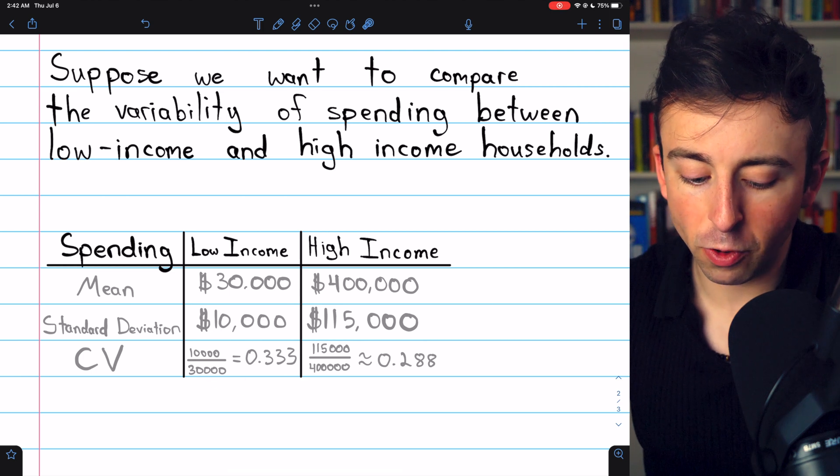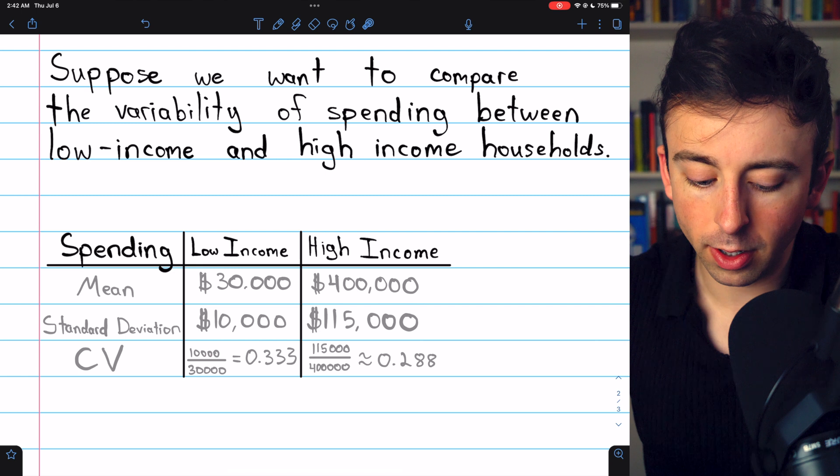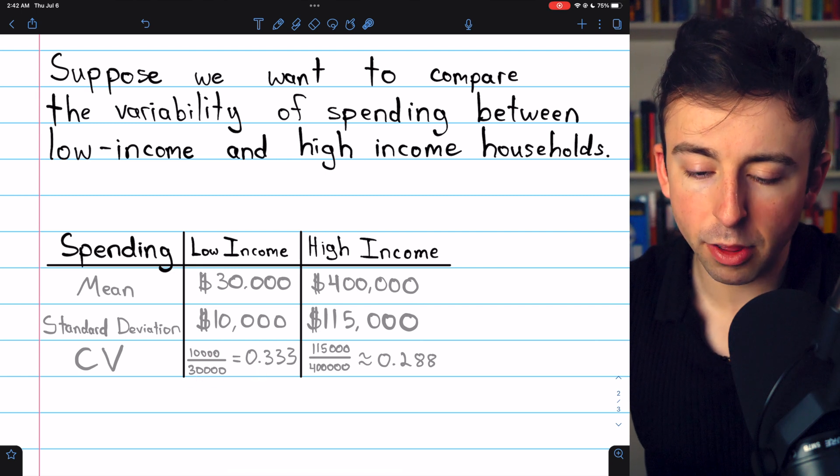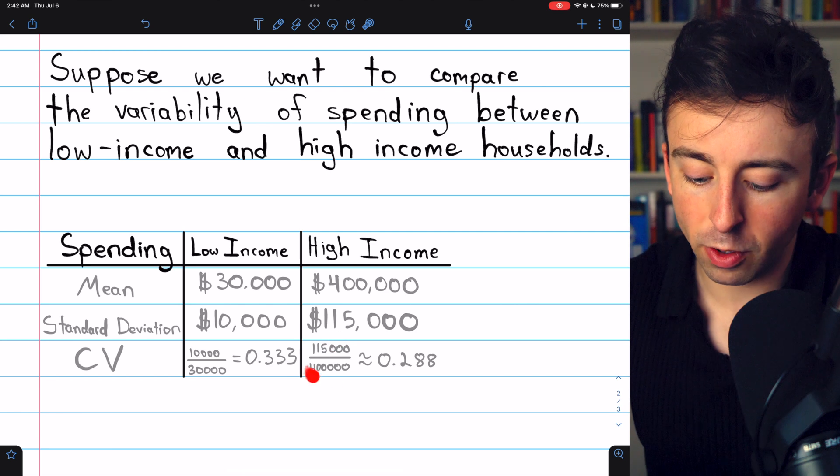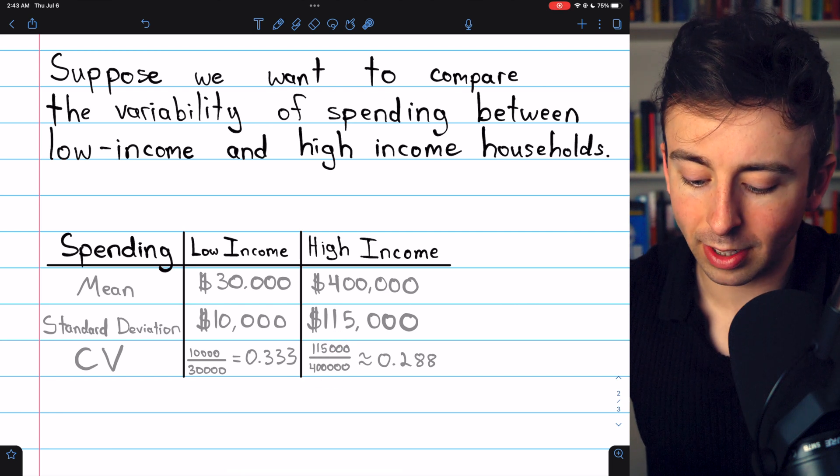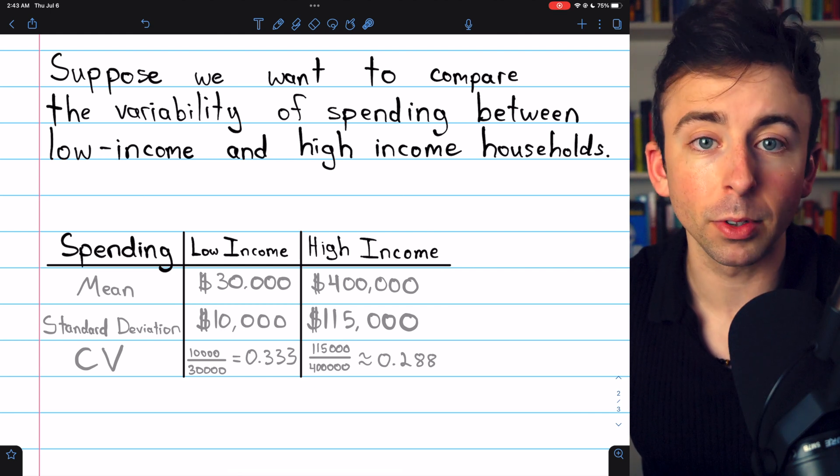In this case, the coefficient of variation in spending for low-income households is standard deviation divided by the mean. It's about 0.333, or 33%. And the coefficient of variation for spending in high-income households is standard deviation divided by the mean. It's about 0.288, or 28.8%.